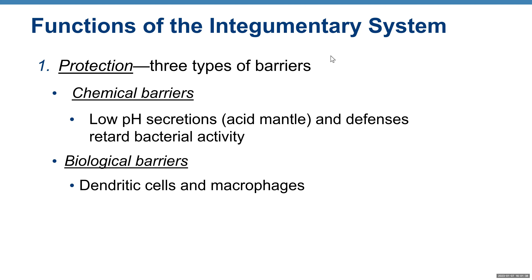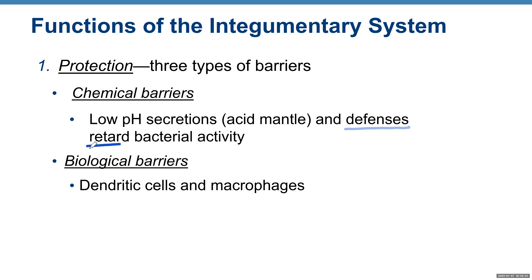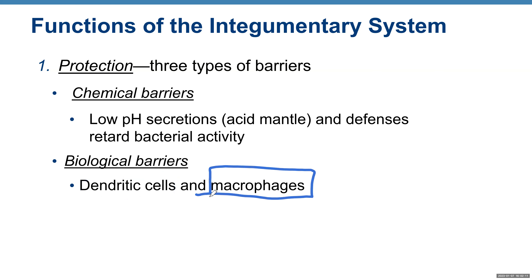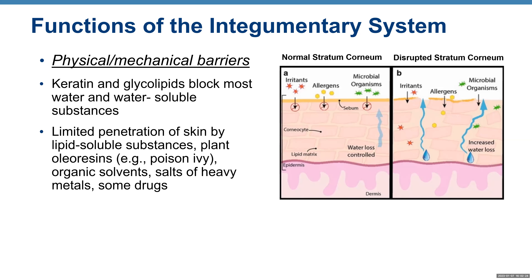The integumentary system is one of the 11 body systems, and skin is the biggest organ of this system. Function number one is protection. Your skin gives you three types of barrier. First is chemical barrier — you have low pH secretion and a special chemical called defensins that retard bacterial activity. It's also a biological barrier: dendritic cells and macrophages protect you from pathogens like bacteria that can possibly harm your body. Chemical, biological, and also physical or mechanical barrier.